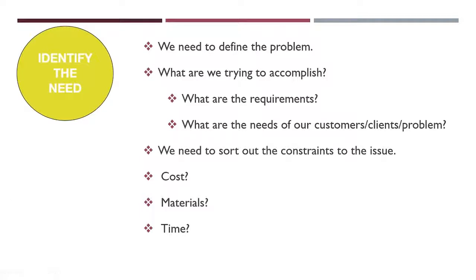These are called constraints. Constraints are what stop us from just doing whatever we want. Engineers don't just do whatever they want — they have to develop a solution that is effective and efficient and comes in under all the different constraints, whether it's a deadline like Thanksgiving or a cost limit. All these different factors play into what we're going to make.